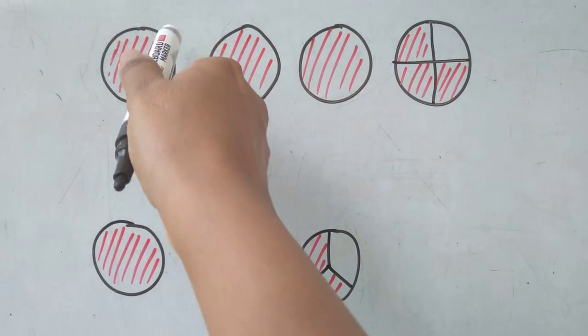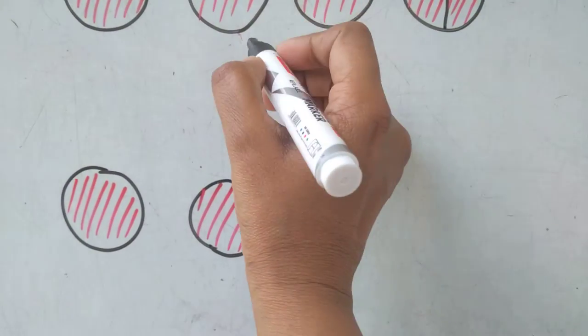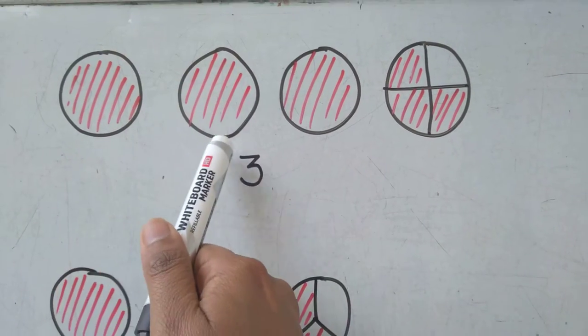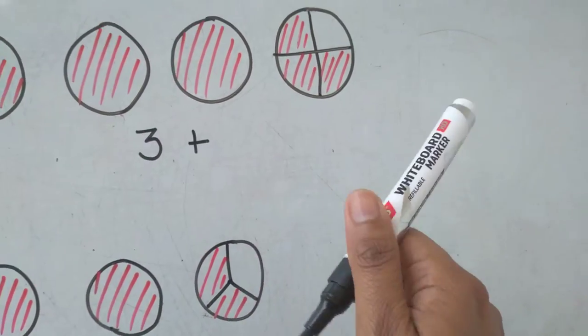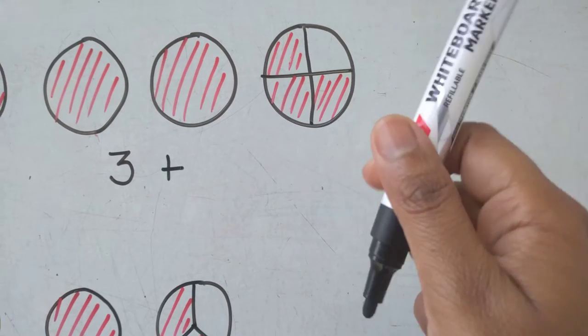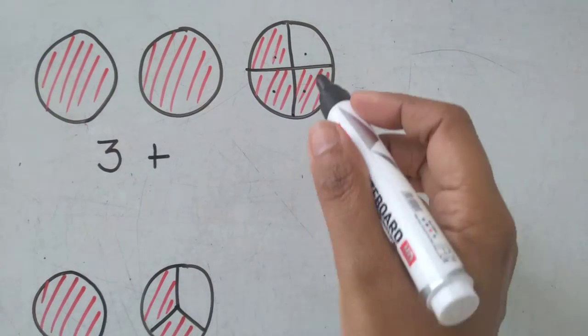One whole, two, and three. So can I write here three? Because there are one, two, three wholes. Now this one - in this figure, the figure is divided into one, two, three, four equal parts.